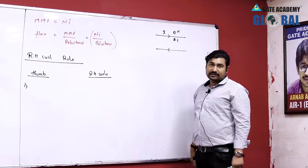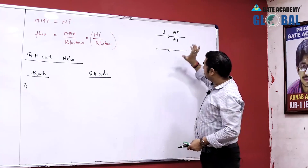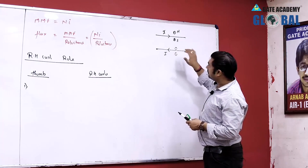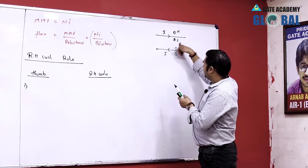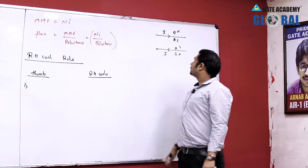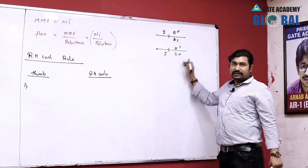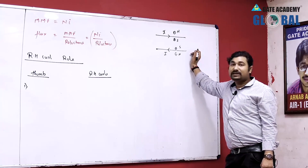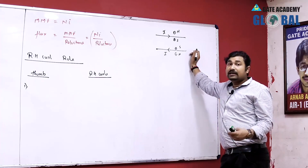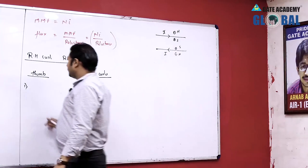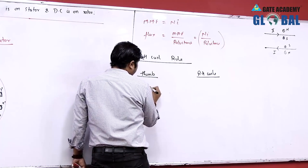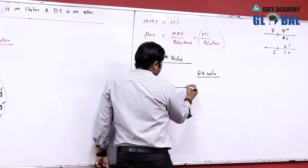If the current is flowing in a particular direction, then the right-hand curl will represent the direction of the field. Two wires carrying current in opposite directions placed nearby will experience a repulsive force. However, if two wires carry current in the same direction, an attractive force exists between them. From the right-hand curl rule, if the direction of current is represented by the thumb, the direction of field is found by the right-hand curl.